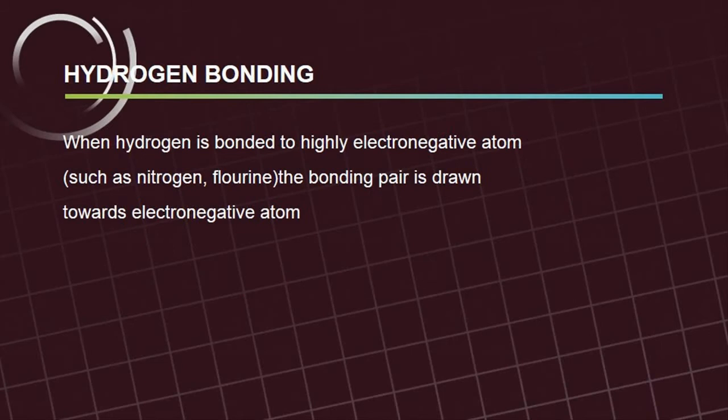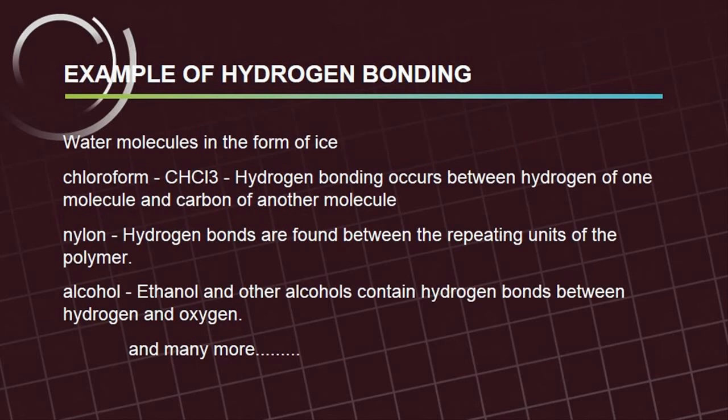When hydrogen is bonded to a highly electronegative atom such as nitrogen or fluorine, the bonding pair is drawn towards the electronegative atom. Examples of hydrogen bonding include water molecules in the form of ice, and chloroform (CHCl3), where hydrogen bonding occurs between the hydrogen of one molecule.